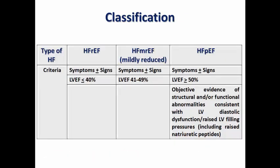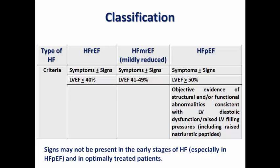We know the famous classification of heart failure into three subtypes according to ejection fraction. Signs may not be present in the early stages of heart failure, especially in patients with heart failure with preserved ejection fraction and those who are optimally treated — that's why symptoms are the cornerstone for diagnosis. The most common type is heart failure with reduced ejection fraction, in which EF is less than or equal to 40%.